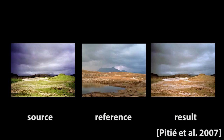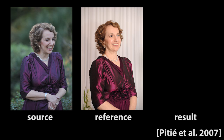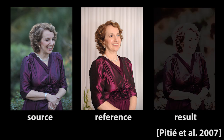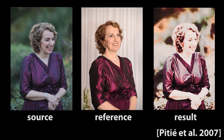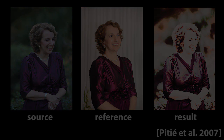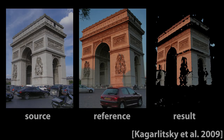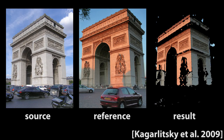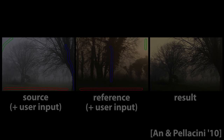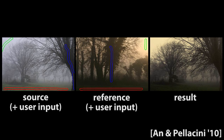Many researchers have approached this problem by treating color palettes as statistical distributions to be aligned. But if there are uniquely colored objects that appear in only source or target images, statistical approaches can fail dramatically. Other methods using feature descriptors work well for rigid piecewise planar scenes, but don't extend well to non-rigid scenes. Manual input can be very effective, but is imprecise and doesn't scale well to large image collections.